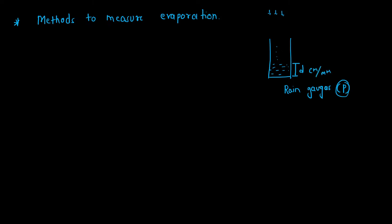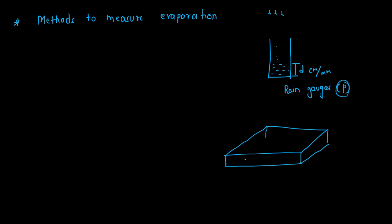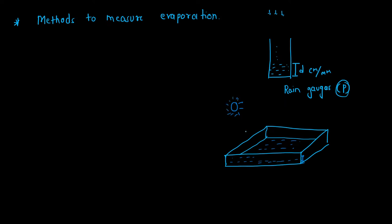In the case of evaporation, we take a pan. In this pan, a certain amount of water is kept. After regular intervals, we check the change in the depth of water, because due to solar energy or heat the water will keep evaporating from the pan. Due to evaporation the level of water will decrease, and we note this decrease in level to get the evaporation value.